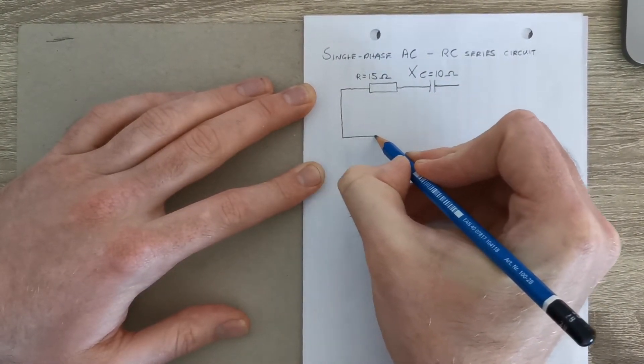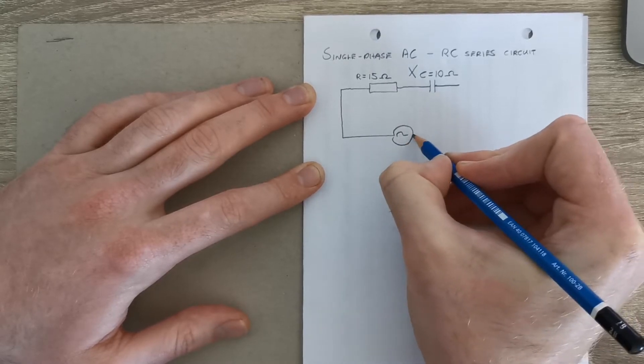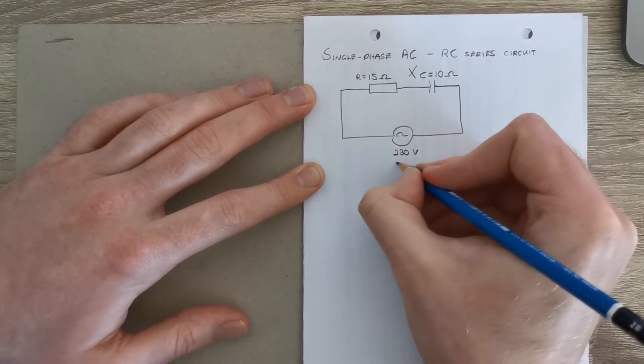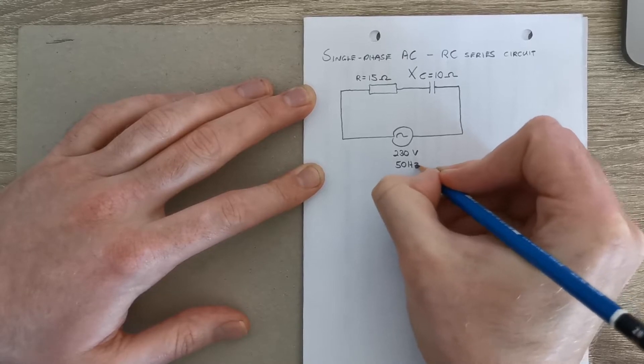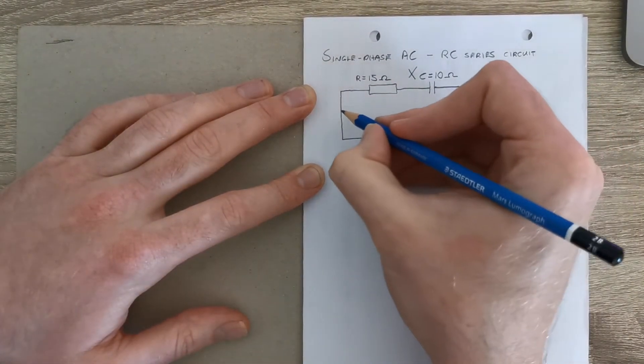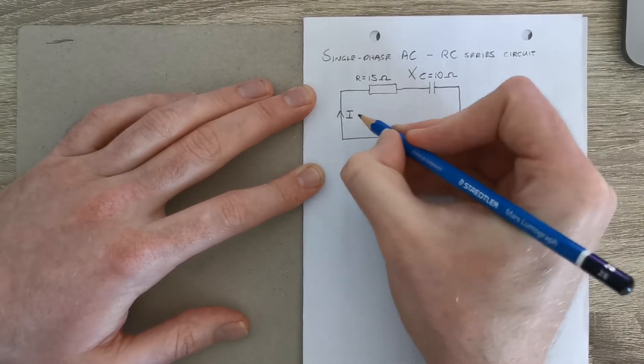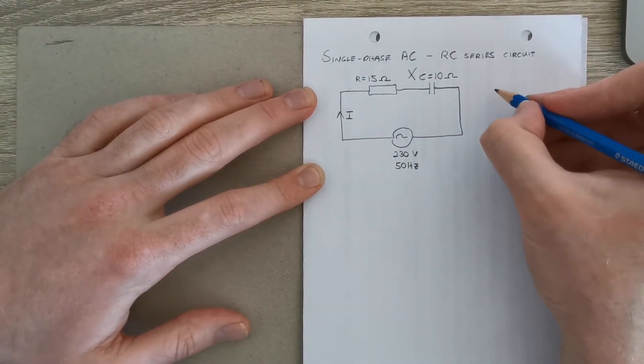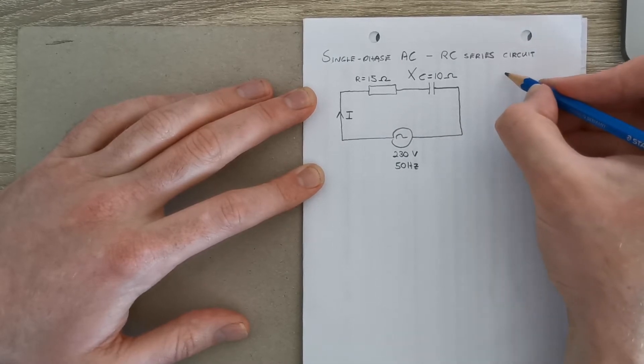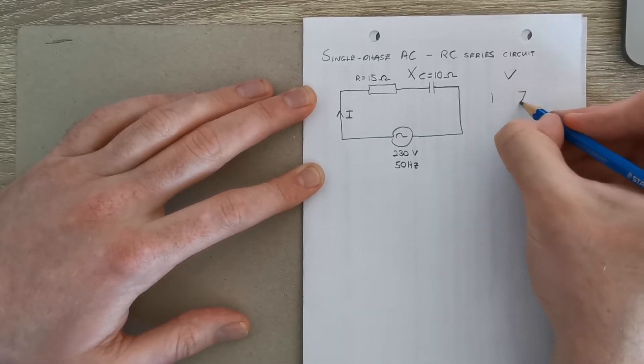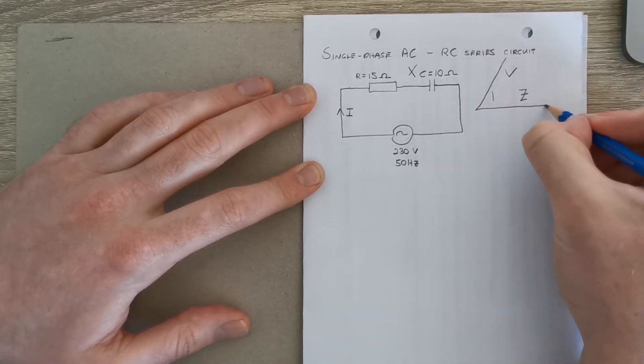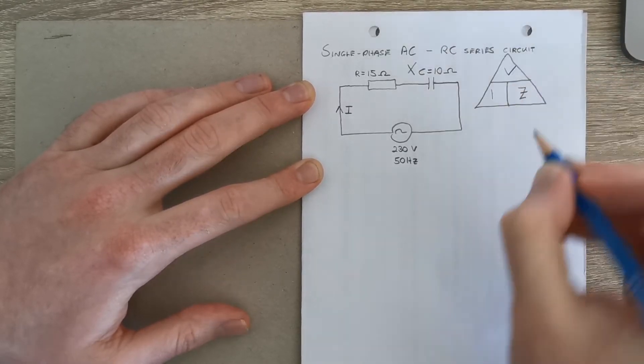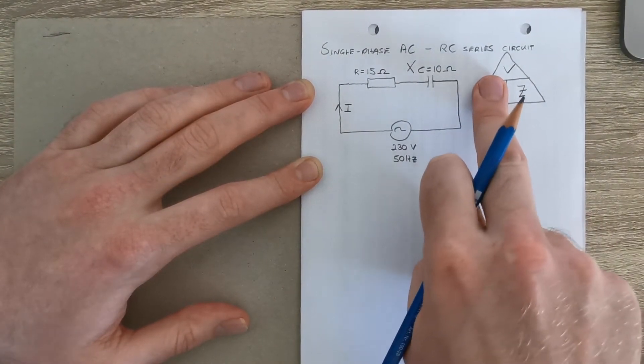And this is connected to an AC supply of 230 volts at a frequency of 50 Hertz. And the question, just like in our oral circuit, is asking us to work out the magnitude and the phase of this current. Now just to recall, we're working with AC circuits here so Ohm's law applies, and the relationship between the impedance, current, and voltage are shown in this triangle here.